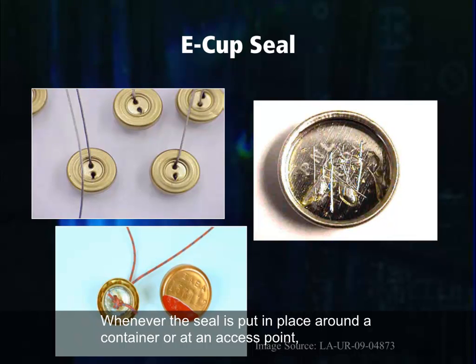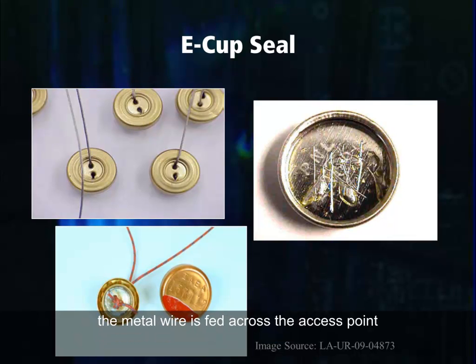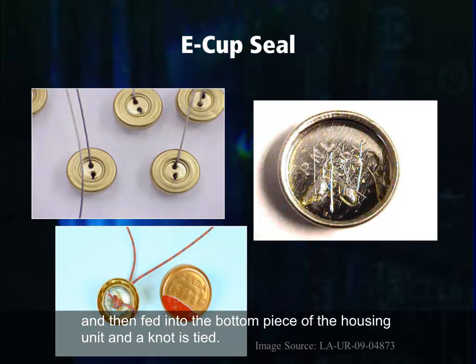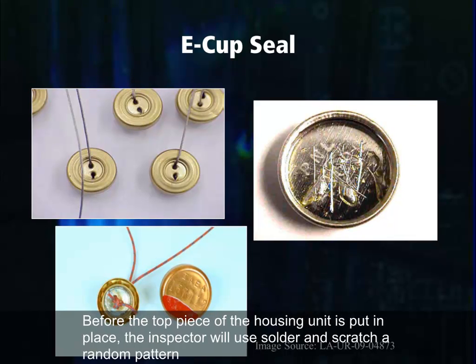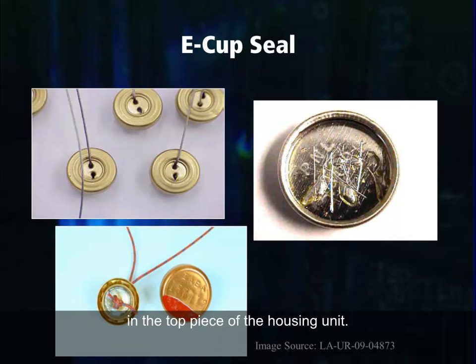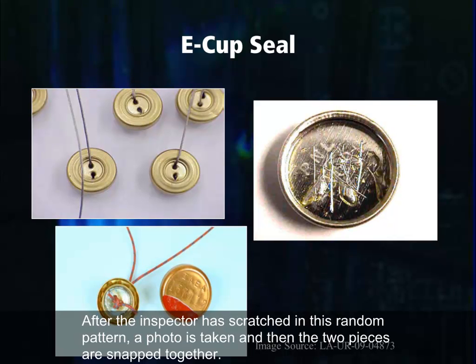Whenever the seal is put in place around a container or at an access point, the metal wire is fed across the access point and then fed into the bottom piece of the housing unit, and a knot is tied. Before the top piece of the housing unit is put in place, the inspector will use solder and then scratch a random pattern in the top piece of the housing unit. After the inspector has scratched in this random pattern, a photo is taken and then the two pieces are snapped together.